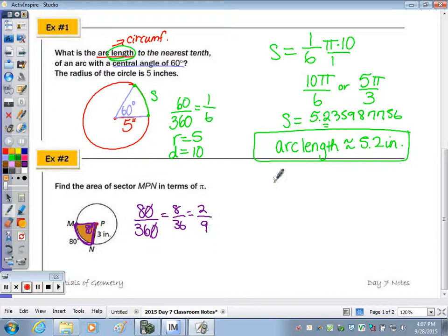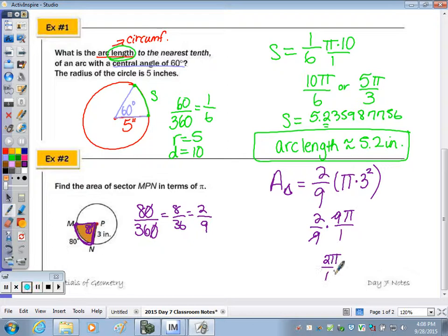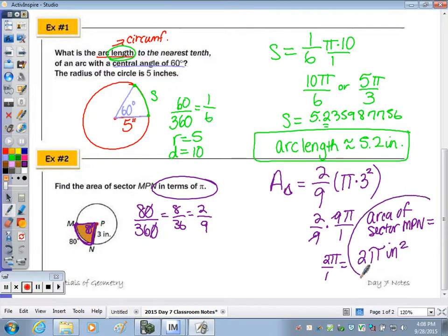So the area of the sector is equal to 2 ninths of the total area, which is pi times radius squared. And we have a radius of 3 inches. So now I have 2 ninths times 9 pi. The 2 ninths can cancel, because you put it over 1, and you can reduce the fraction. And we end up with 2 pi over 1, which is simply 2 pi. It wants the answer in terms of pi. So the area of sector MPN equals 2 pi inches squared. Again, circumference is in linear units, where area is in square units.